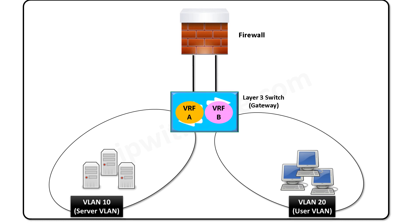This is where we can make use of VRF-Lite. We create two VRFs: VRF A, which is for the server VLAN, and VRF B for the user VLAN. Both VRFs also have routing for the respective interface connecting to the firewall. Once the VRFs are set up and routing is configured, any communication between VLAN 10 and VLAN 20 will be routed through the firewall, since VLAN 10 subnet routing is handled by one VRF and VLAN 20 subnet routing is handled by a different VRF.